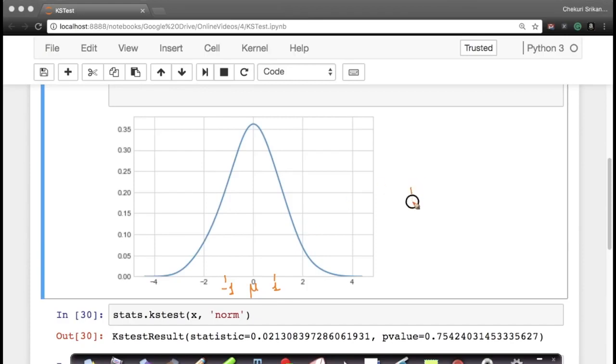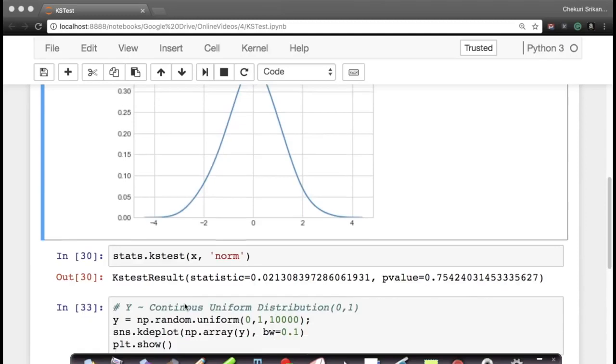Now, if I want to use KS test, my Kolmogorov-Smirnov test, to determine whether my values in x (I have 1000 values in x) follow Gaussian distribution or not, how do I do it? It's just literally one line of code.